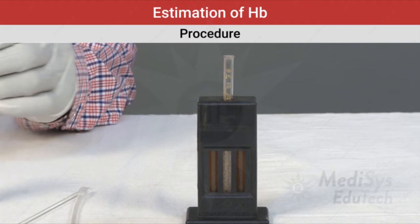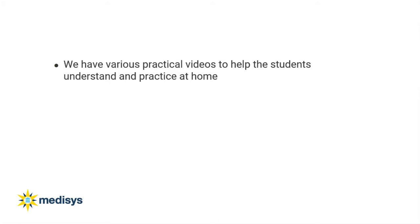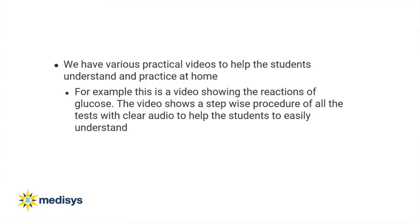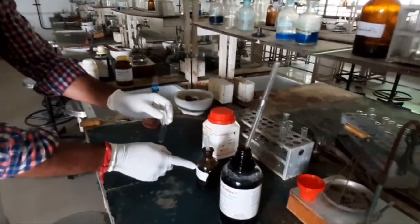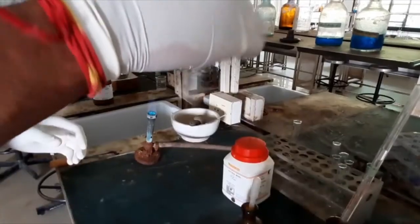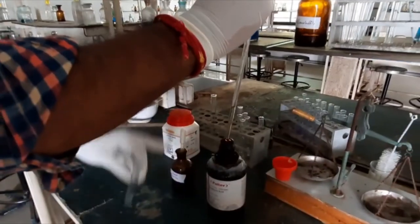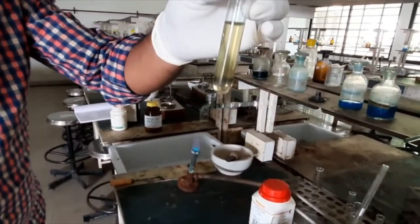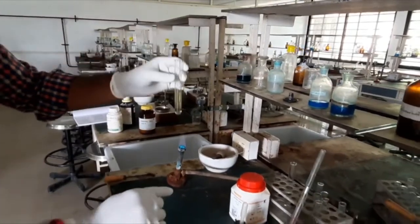In the clinical dental subject specialties, we have various practical videos to help students understand and even practice the processes at home. For example, this is a video showing the reactions of glucose. It sequences stepwise the procedures of all the tests with clear audio description. Take 2 ml of glucose solution, add 2 drops of 1% alcoholic alpha-naphthol and mix the solution. After that, add 2 ml of concentrated H₂SO₄ along the sides of the test tube. A purple color ring is formed at the junction of the two liquids.